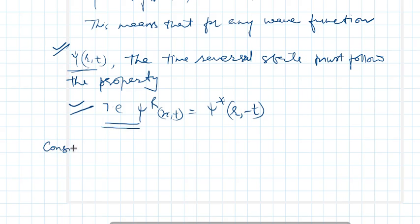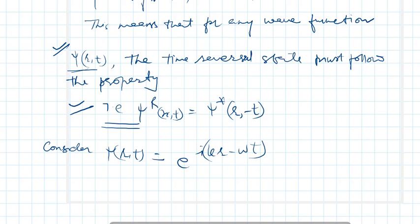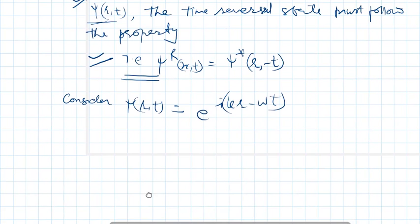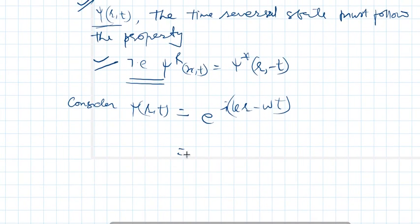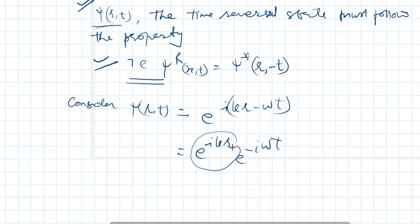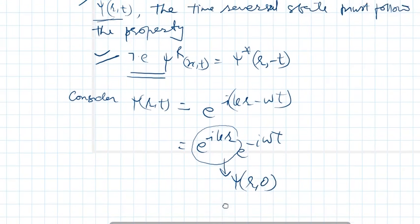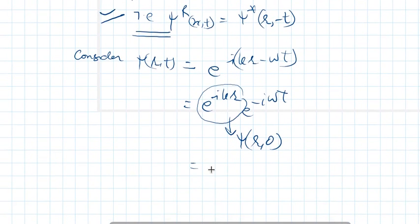Consider ψ(r,t) as a wave function e^(i(kr - ωt)). Let me split this wave function into the spatial and the time-dependent part: e^(ikr) and e^(-iωt). The spatial part is independent of time — let me call this as ψ(r,0). That means ψ(r,t) = ψ(r,0) · e^(-iωt).